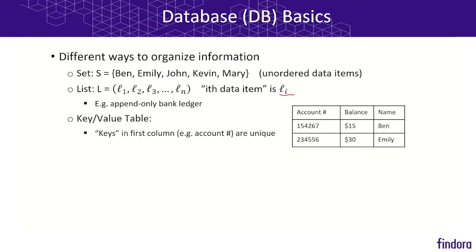Another way of organizing information is in a key-value table — for example, a table of accounts and balances. The main difference from a list is that the key column, usually the first column, is a collection of unique items. So every account number is unique, and the records associated with that account number aggregate all the information linked to that account.